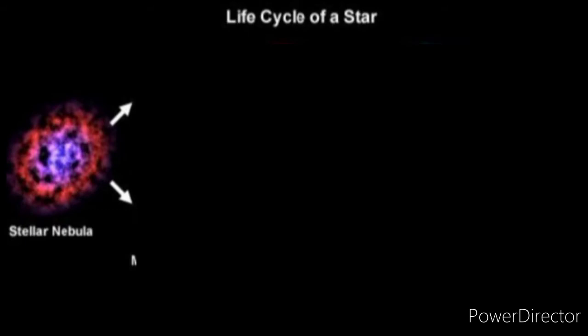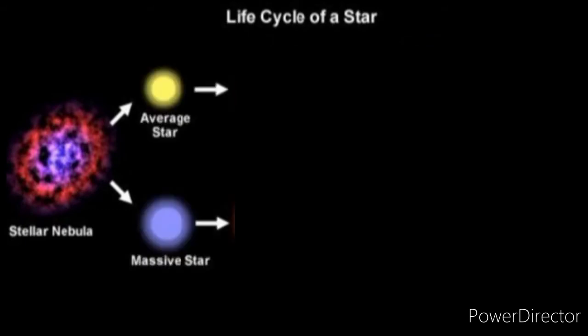The next thing that happens is that a forming star can be one of two types: either an average star or a massive star. It's like a choose-your-own-adventure story with two options. Average stars like the sun last about several billion years because they burn fuel slowly, while massive stars last only a few hundred thousand years.